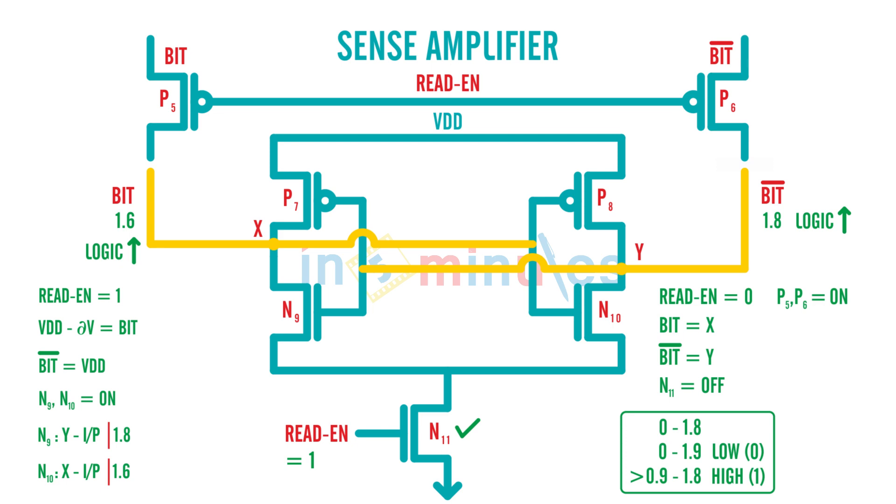So node x or node y, which one do you think will be able to go to 0.9 or even 0 first, as we discussed in the analogy? Because n9 has input 1.8, it will be moving first towards 0 compared to node x.